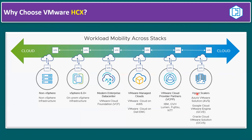Why choose VMware HCX? The main advantage is workload mobility across stacks. HCX supports vSphere version 6.0 and later — 6.5, 6.7, 7.0, and the latest version 8 series. The first scenario is non-vSphere infrastructure: HCX supports KVM (Red Hat KVM) and Hyper-V, enabling migration of workloads from these non-vSphere hypervisor platforms to a cloud environment. The second scenario is vSphere on-premises workloads — virtual machines or container applications migrated to private or public cloud.